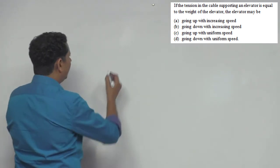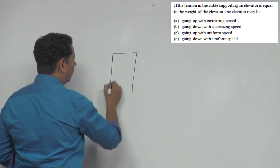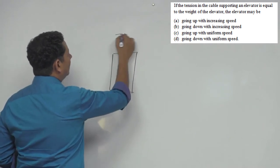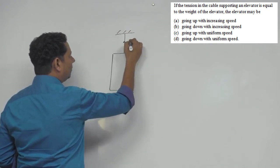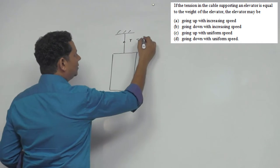Let's understand the scenario. This is your elevator, and the elevator is tied here, and there is tension T at this point. Now this tension T